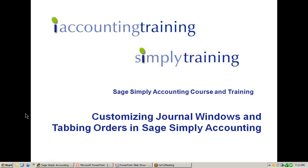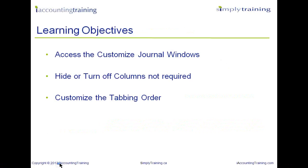Welcome to a demonstration on how to customize various journal windows in Sage Simply Accounting program. This presentation is presented by iAccountingTraining.com and sister site SimplyTraining.ca. By customizing your journal windows, it will save you time when entering transactions and moving around in the journal screens. In this recording, you will learn where to access the customized journal window feature, turn off columns that are not required, and customize the tabbing order for moving from field to field.